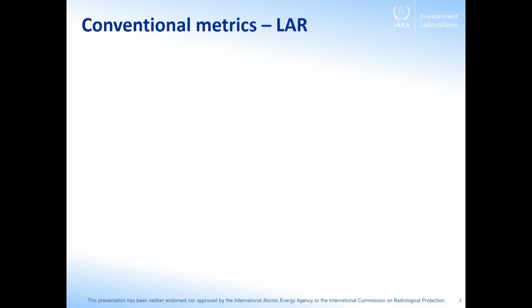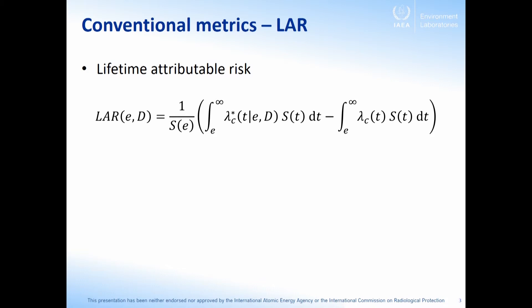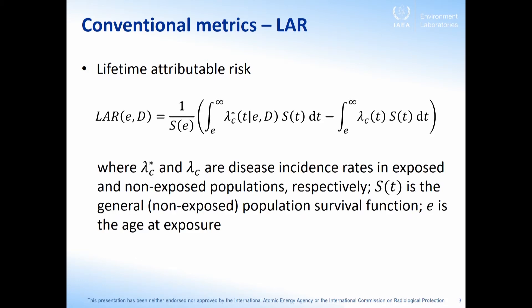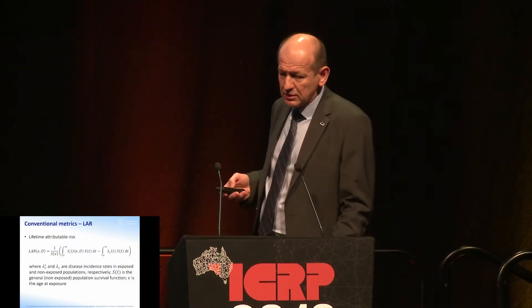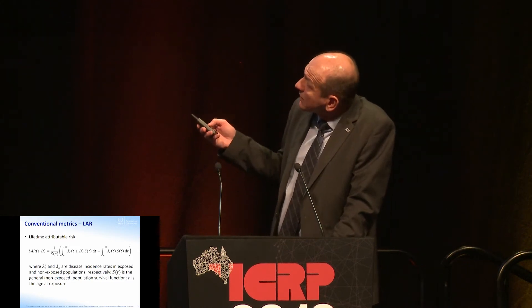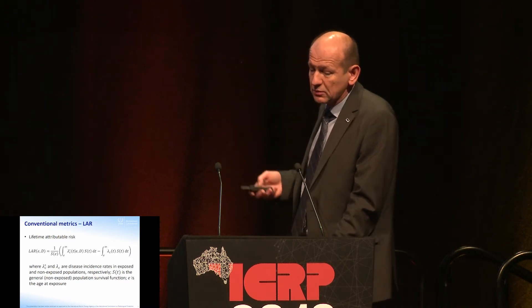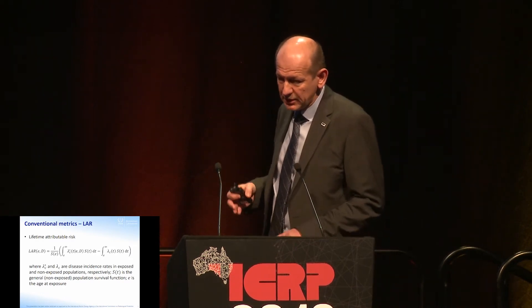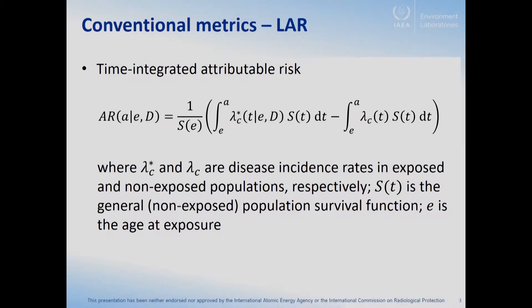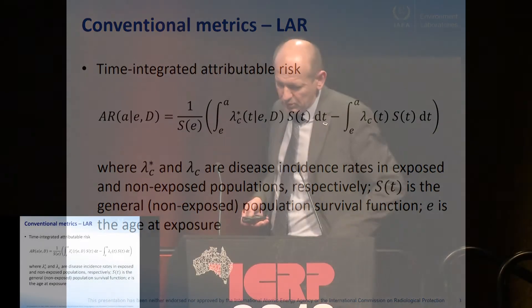From conventional risk metrics, the first to mention is the well-known and widely used lifetime attributable risk. Without going into the mathematical details, this quantity is calculated using certain demographic and health statistics data. It needs a survival function for the general population and the incidence rate for exposed and non-exposed populations — the effect is expressed as the difference between these two groups. When integration is limited to a certain age rather than full lifetime, it is called simply the attributable risk.